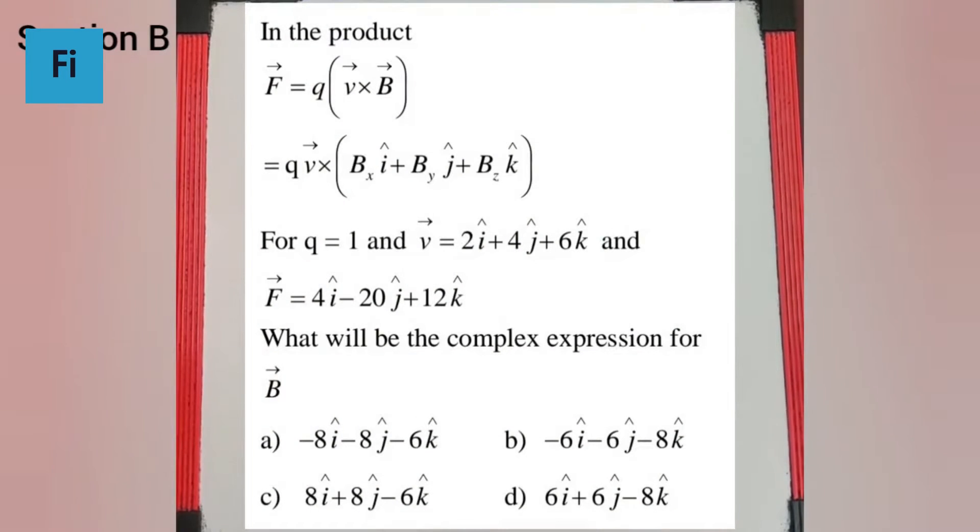The question says: In the product, F bar is equal to q times v bar cross B bar, for q is equal to 1 and v bar is equal to 2i cap plus 4j cap plus 6k cap, and F bar is equal to 4i cap minus 20j cap plus 12k cap. What will be the complex expression for B bar?